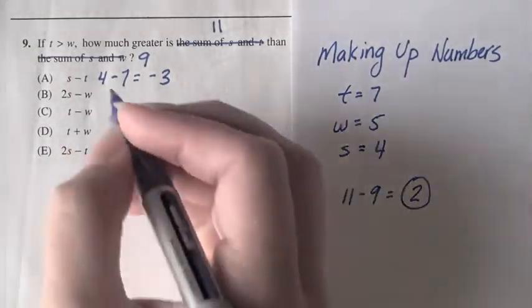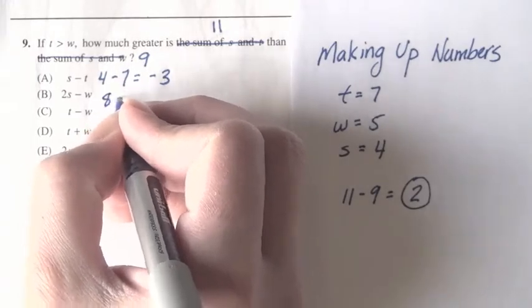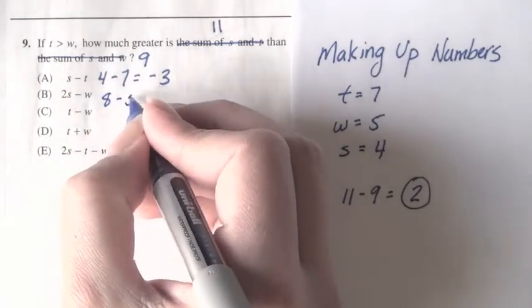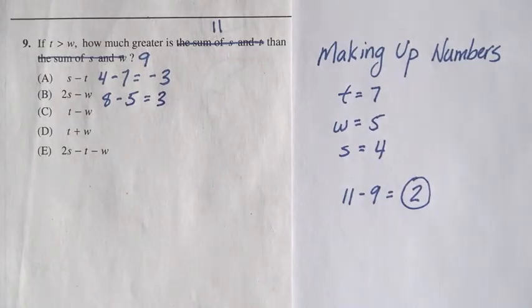2s minus w, well, that's 2 times s, or 8, minus 5, which is 3, still not what we want.